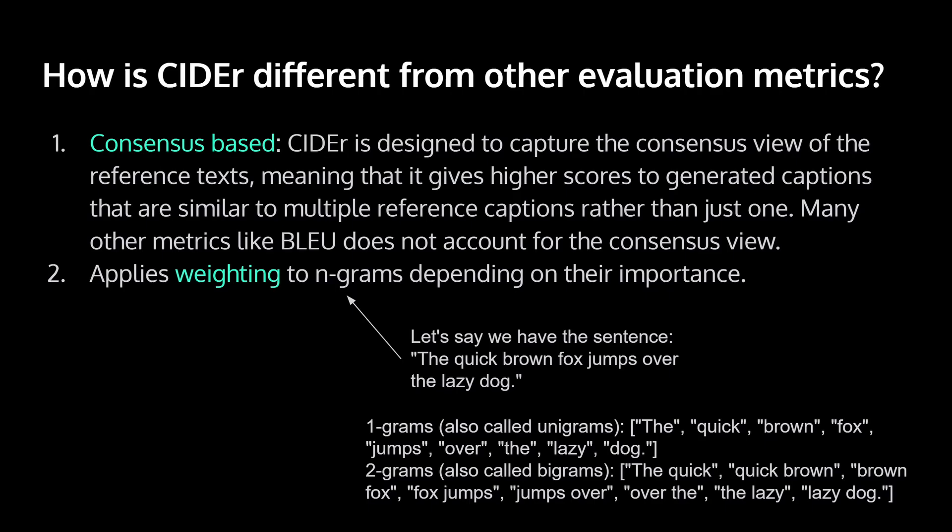And second is that it applies weighting to n-grams depending on their importance. And I'll quickly explain what n-grams are in case you're not familiar. So an n-gram is just, n is just a constant. It could be one, two, whatever. And for example, one gram, also called unigram, is each individual word. And two gram, also known as bigram, is two words. And there's also trigrams and so on.